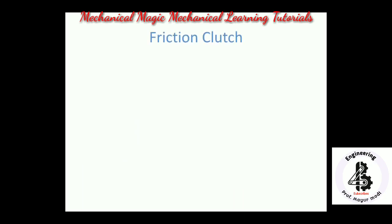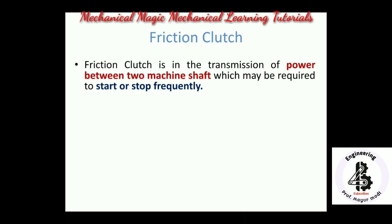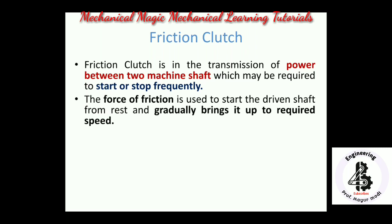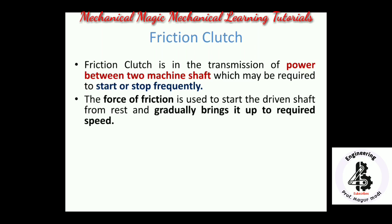Starting with the friction clutch. A friction clutch is used in the transmission of power between two machine shafts which may be required to start or stop frequently. The force of friction is used to start the driven shaft from rest and gradually bring it up to the required speed, connecting the shafts to transmit power and motion.